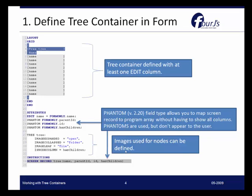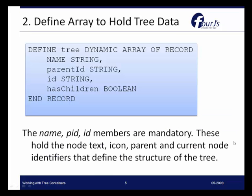That will help us with the loading and displaying of the data. Once we've defined our tree container and identified the attributes for it, the next thing is to define an array in the program itself. Here we're simply defining a dynamic array, and notice that it has the same columns and same information as was in our screen record — these are required in order to manage the tree view in our code.